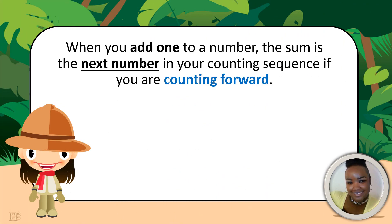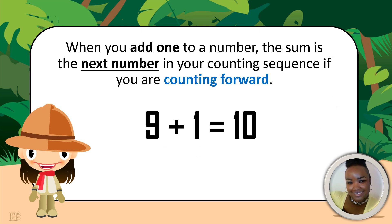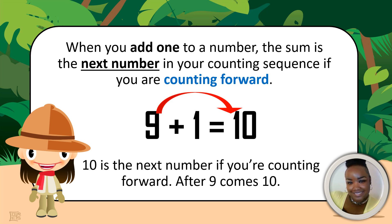When you add 1 to a number, the sum is the next number in your counting sequence if you are counting forward. Let me show you an example: 9 plus 1 equals 10. 10 is the next number if you are counting forward — after 9 comes 10. So when adding 1, you move to the next number. Here are some more examples.